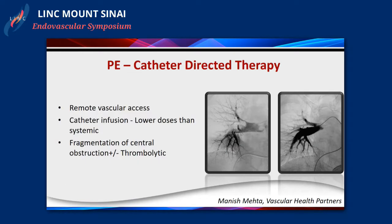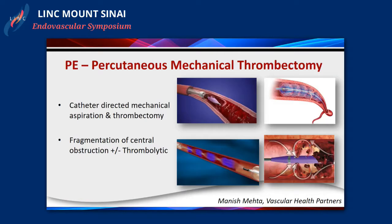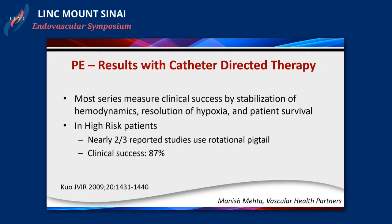The idea behind catheter-directed therapy is pretty well established. We get access, we get into the clot burden. Whether we do mechanical aspiration, EKOS catheter, suction thromboembolectomy, or simply start TPA lysis - all these things are being evaluated. Unfortunately, not necessarily in a constructive way where we have well-defined parameters. So I think we have a long way to go until we can come up with better understanding of what to do and what not to do.